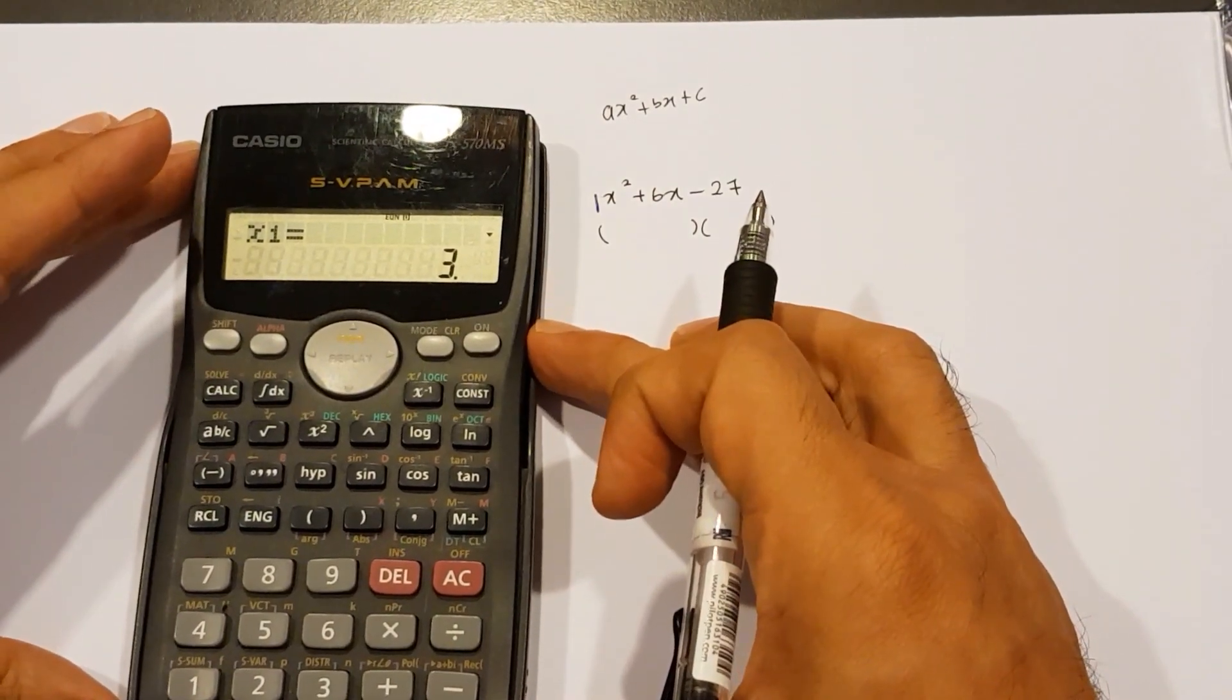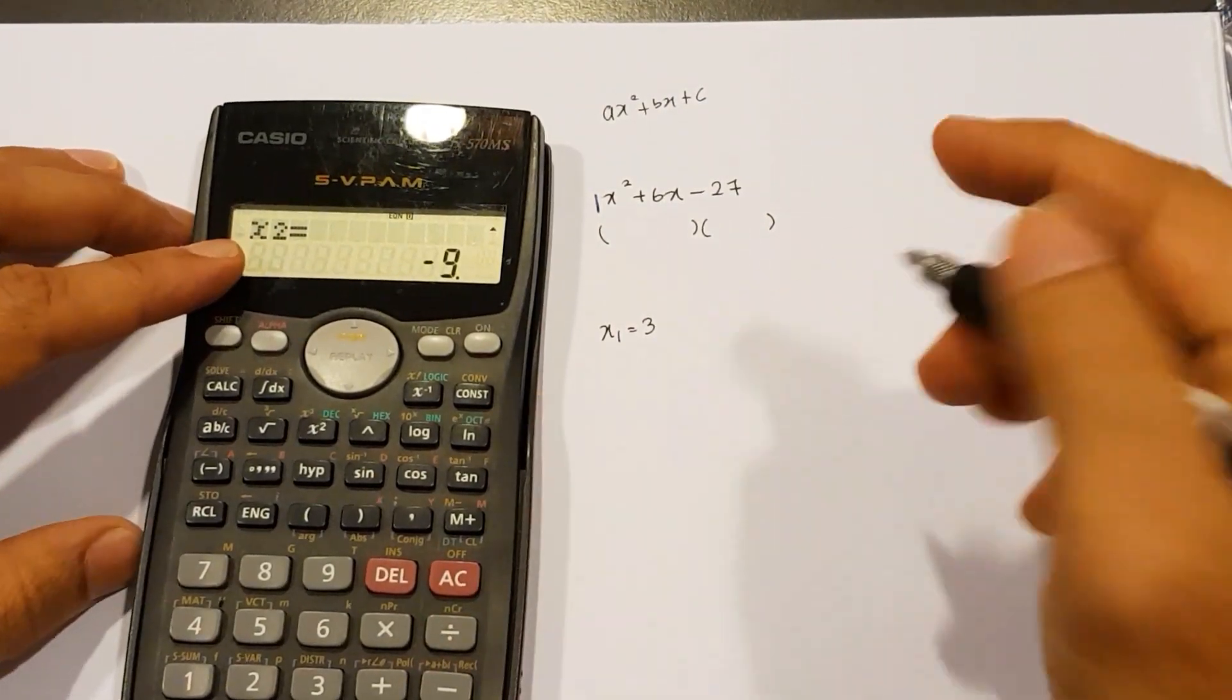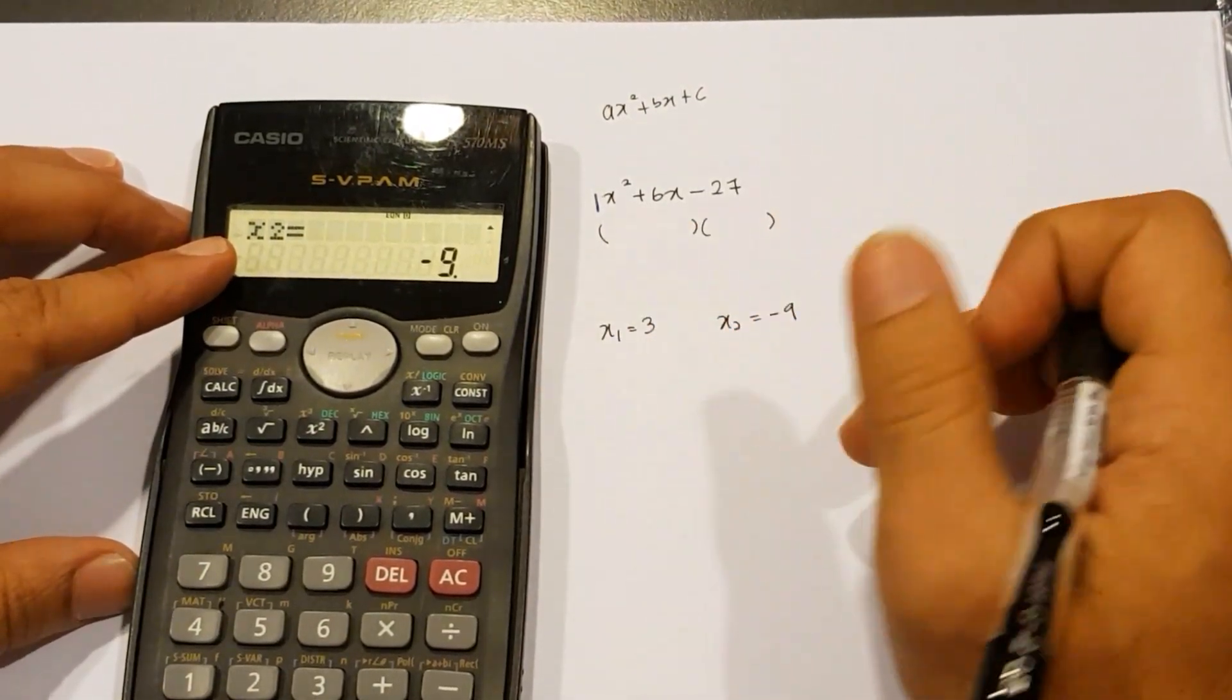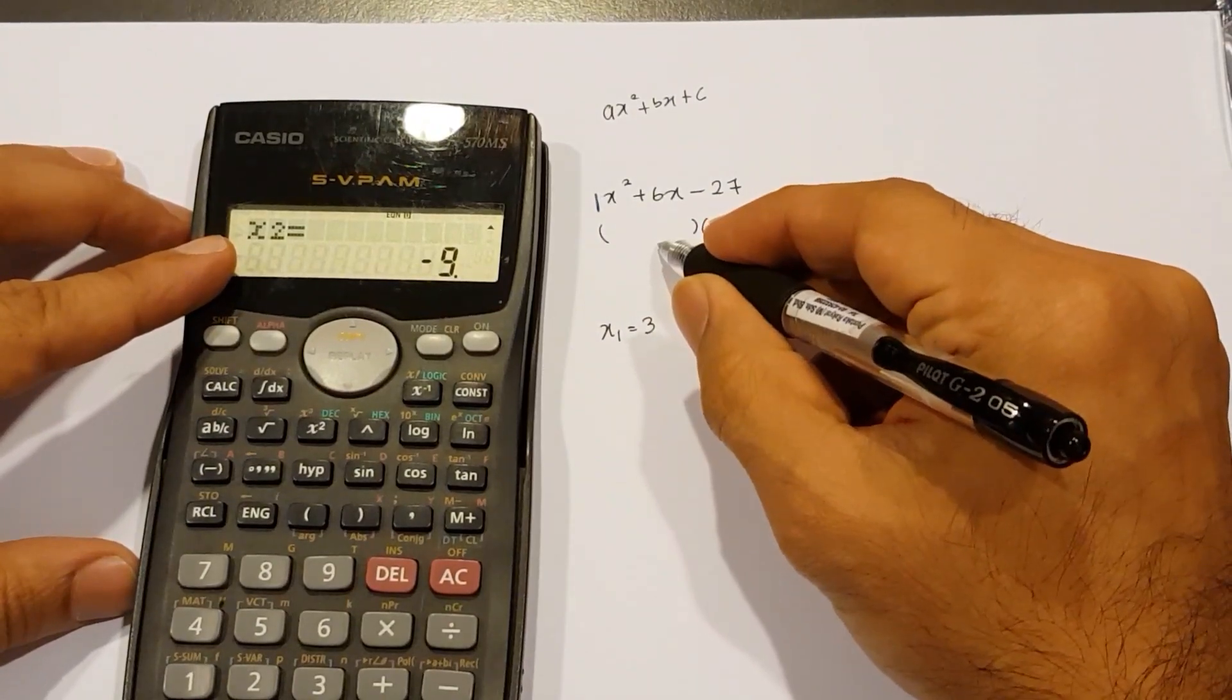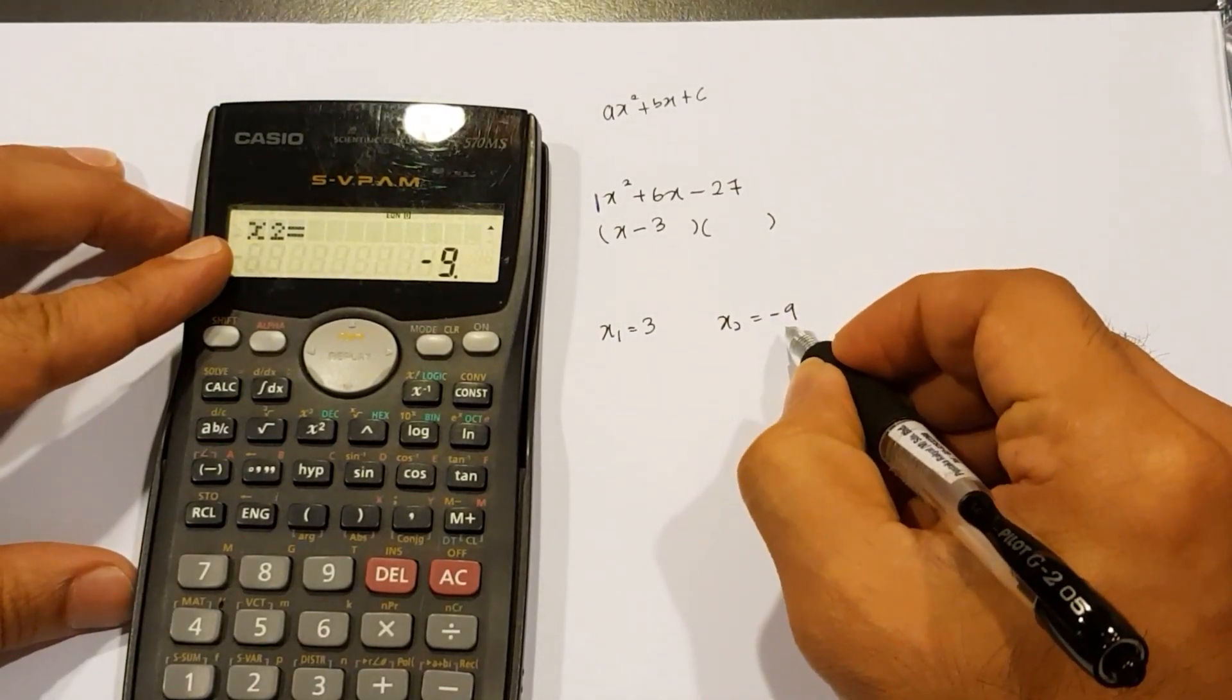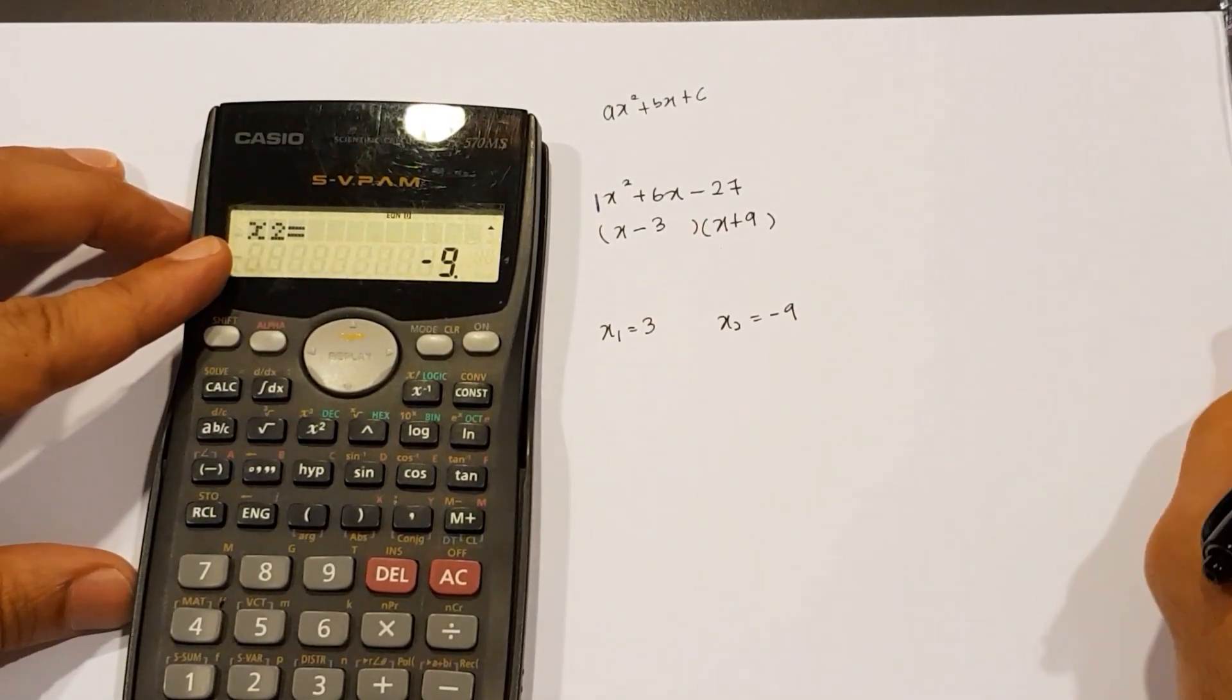What the calculator does is it gives us two values. You can see x1 is equal to 3. I'm going to write that x1 equal to 3. If I tap equal again, now we get x2 equal to negative 9. What this means is that these two values are the answers for x, but we want to factorize, which means we want them to be in the bracket. Think of it this way. When the number is a positive number, if I take that number and place it back into the bracket, it becomes the opposite. Instead of x3, I'm going to write in the bracket x minus 3. That's one factor. And this is negative 9, so instead of negative 9, I'm going to write x plus 9. Those are the two factors in the brackets.